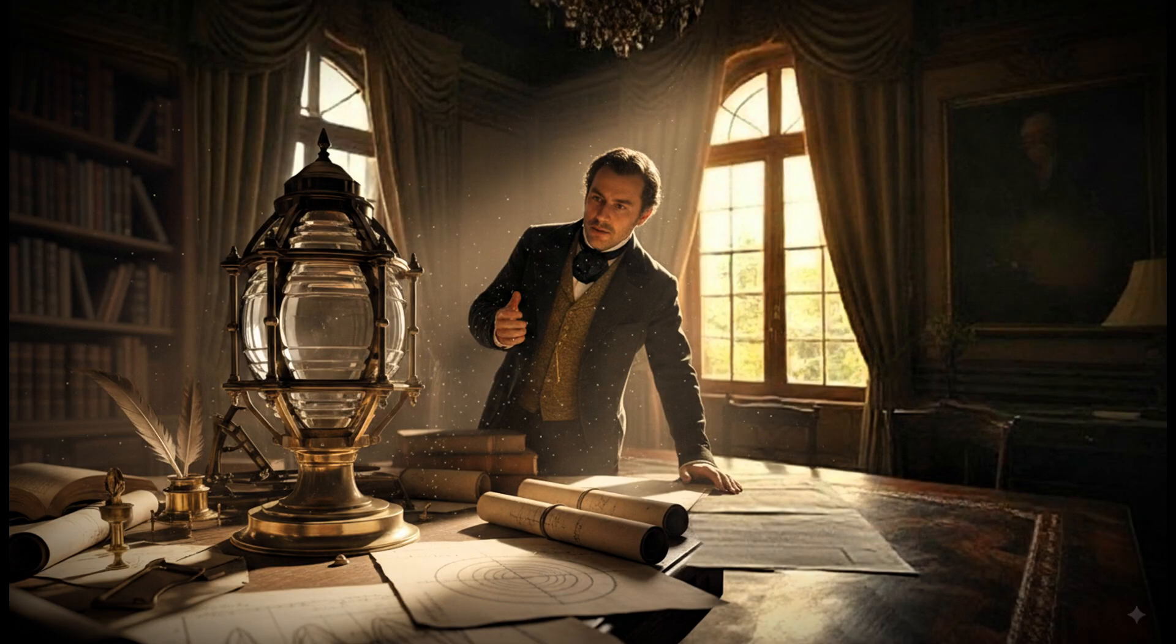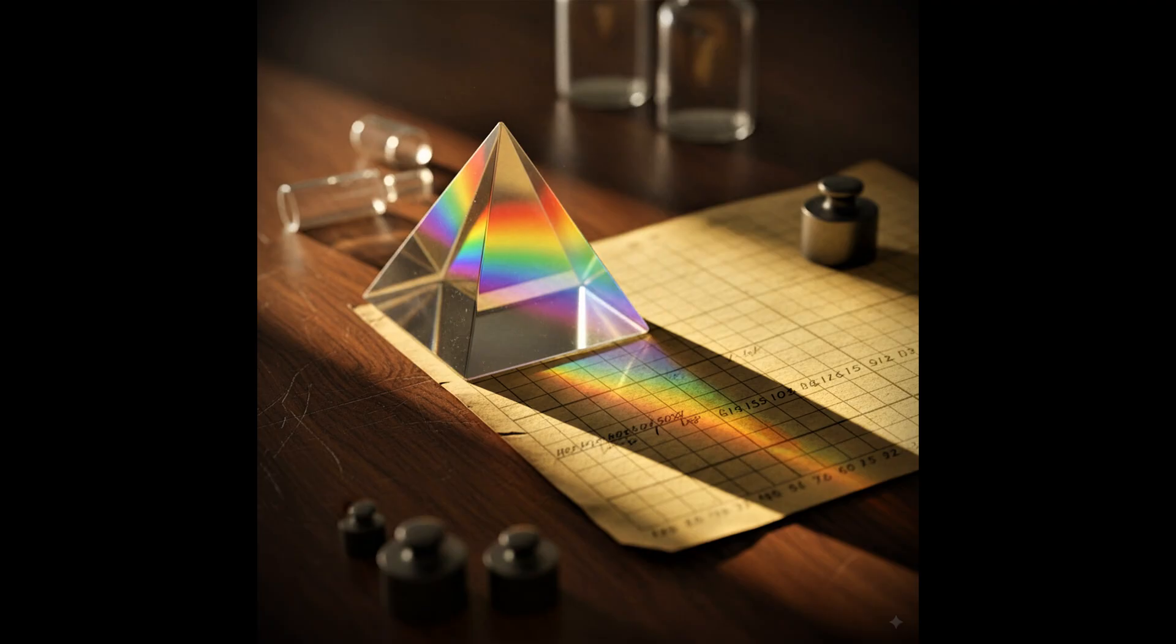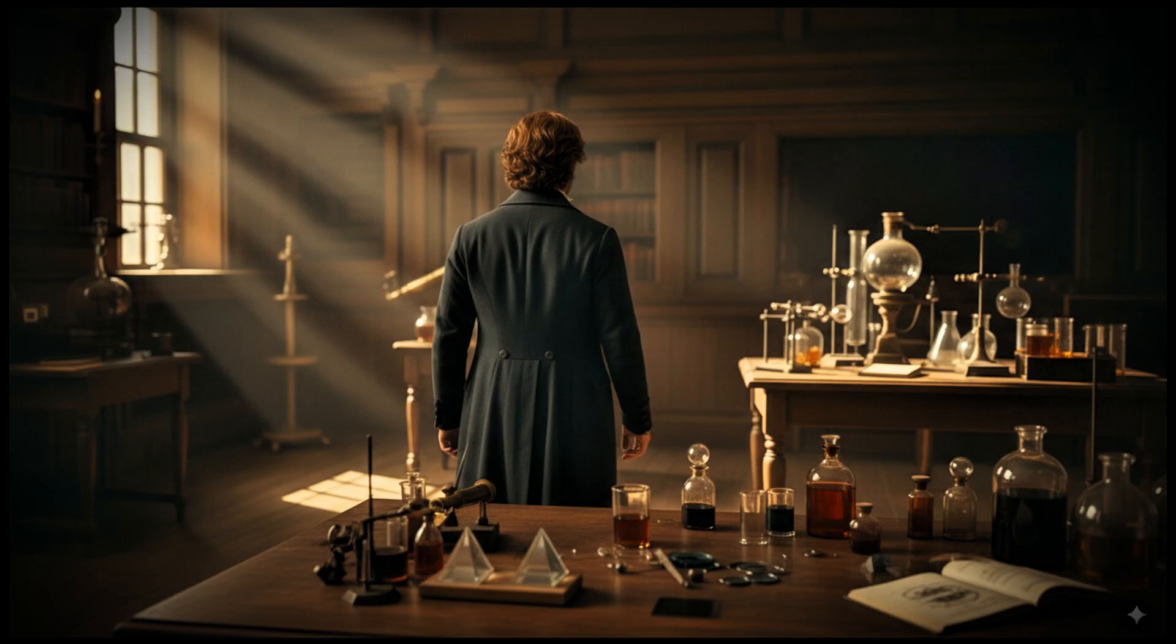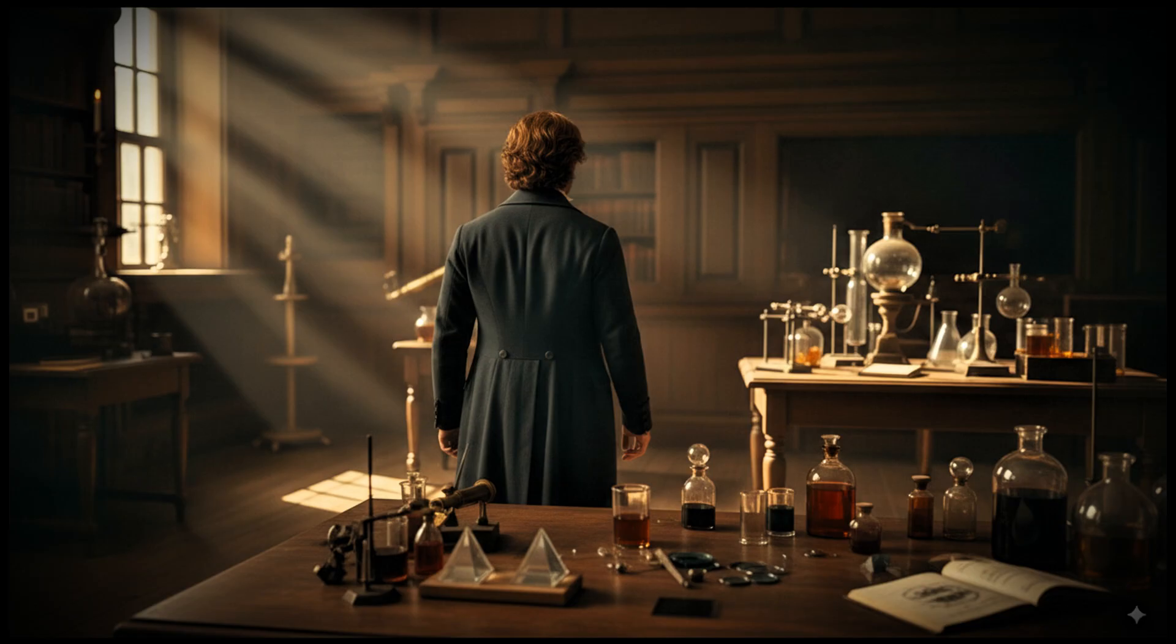Young also went further. He used interference to measure the wavelength of different colors of light, showing that color wasn't just a sensation, but a measurable property of waves. This transformed optics into a precise science.